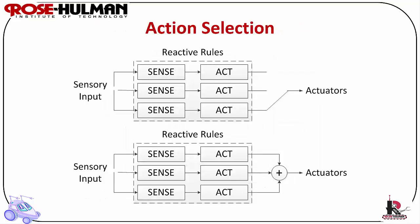Action selection: there are several ways to combine parallel reactive rules. One is a multiplexer or arbitration, used to create a hierarchy or time sequence for producing different rules. The other option is fusion or summation, which is a standard method for combining multiple rules. This type of action selection affords emergent behavior.